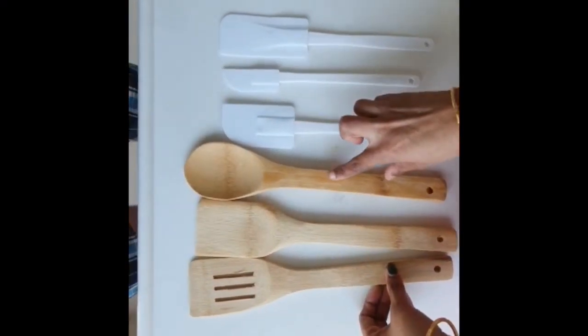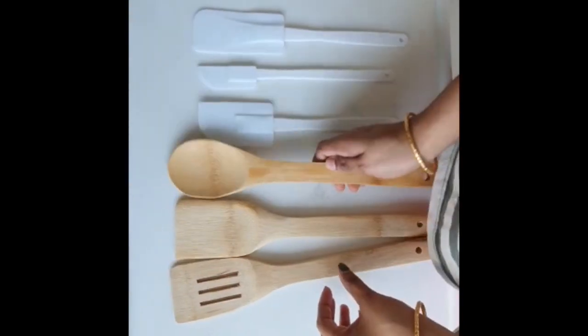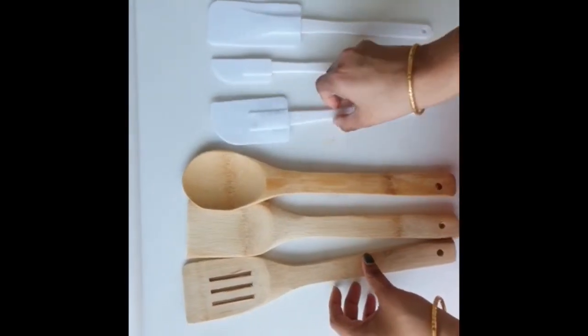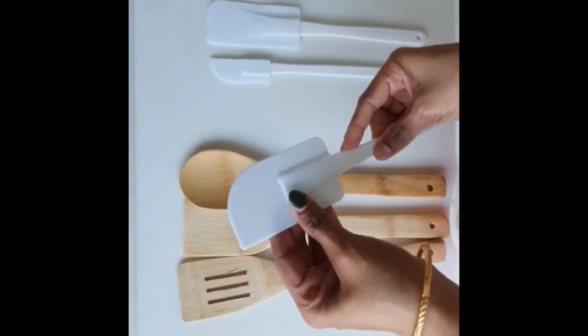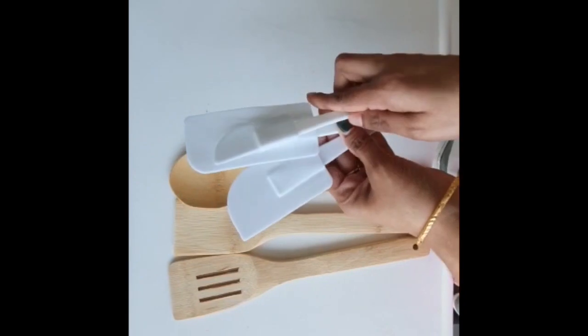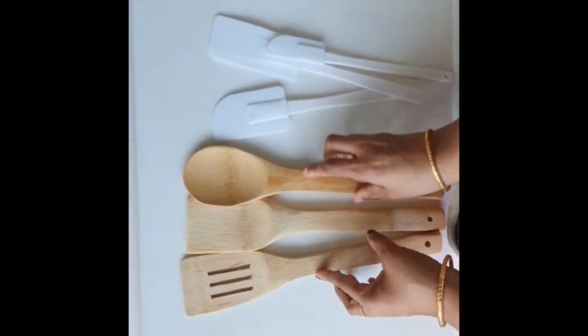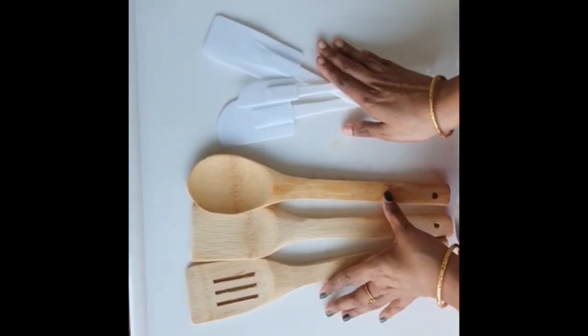Spoons and spatulas. So wooden spoons, it will be very handy for mixing purposes when you are mixing a cake batter or something, and this one also for mixing, it will be very helpful. So you can buy this plastic ones or silicone ones, whatever you like. So these things will be very helpful, you can add this also to your buy list.